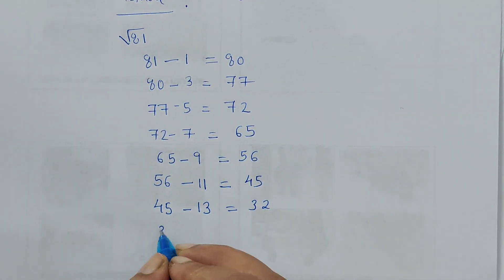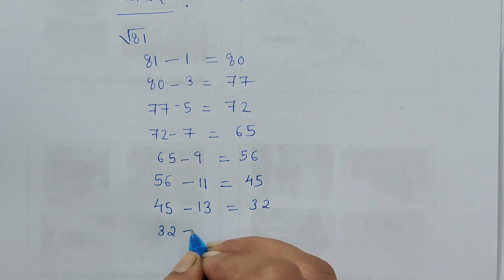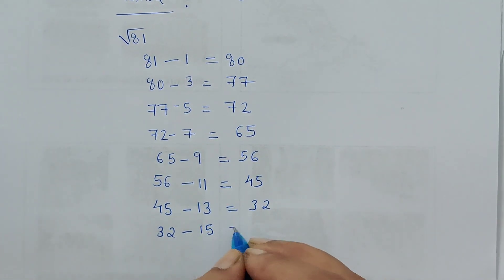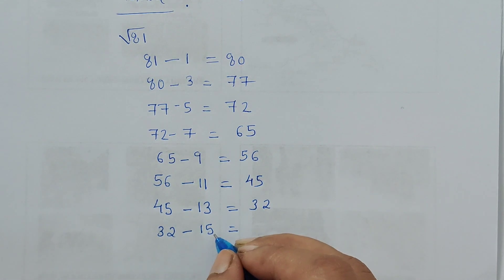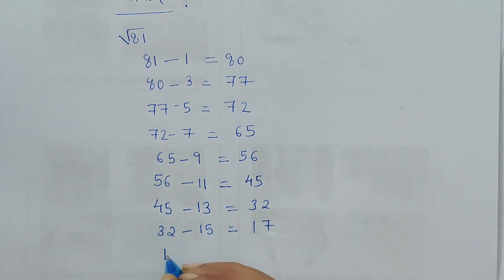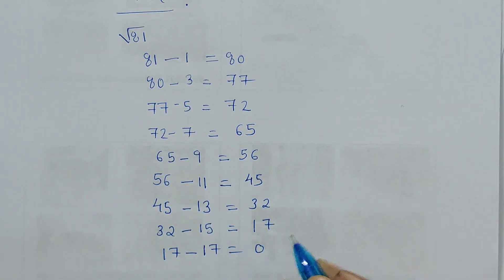Write 32 here. The next odd number is 15, so 32 minus 15 is 17. Now write 17 here, and the next odd number after 15 is 17, which gives us the result 0.